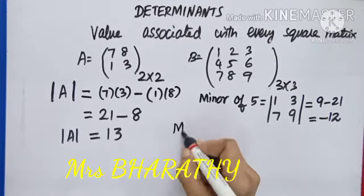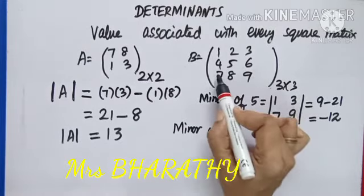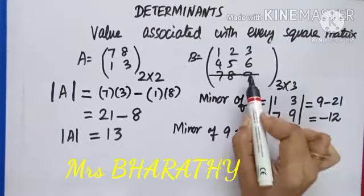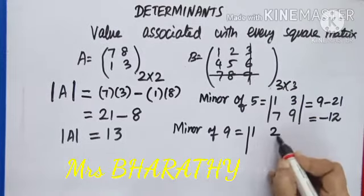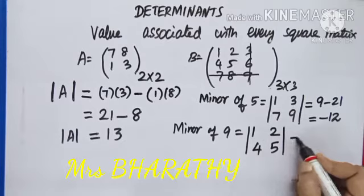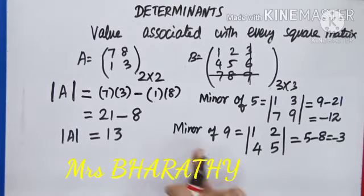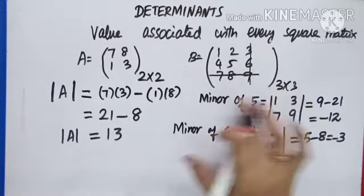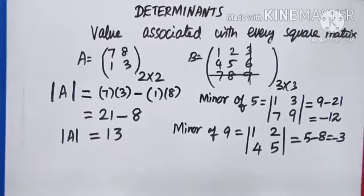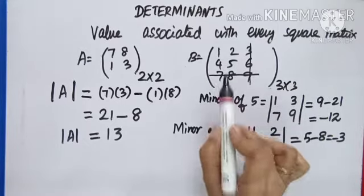Another example: minor of 9. Since 9 is in the third row and third column, hide them. What remains is 1, 2, 4, 5. Expanding: 5 minus 8 = -3. So the minor of 9 is -3. In general, to find the minor of any element, suppress or hide the row and column where that element is present. For a 3x3 matrix with 9 elements, we can find 9 minors.